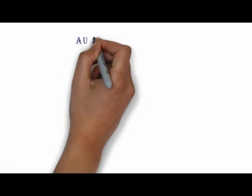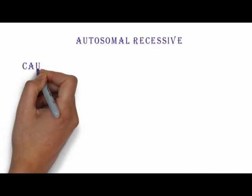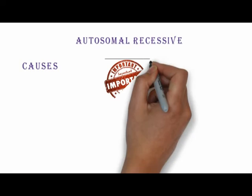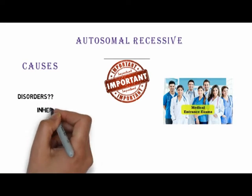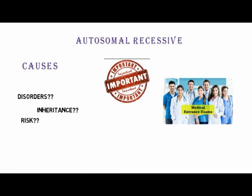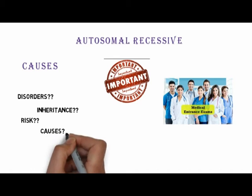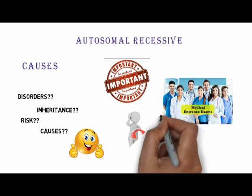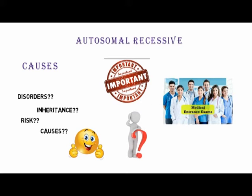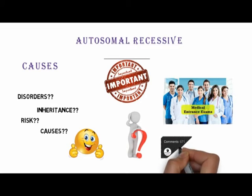Today we'll discuss autosomal recessive disorders and their causes. This is a very important topic for all medical competitive examinations. There are many questions on the risk of inheritance to offspring and on the causes. In this video, I'll explain what these disorders are, how they're inherited, the risk of inheritance, and several causes with the help of good mnemonics. At the end of this video, I've asked a question. Do listen till the end and answer that question in the comment section below.